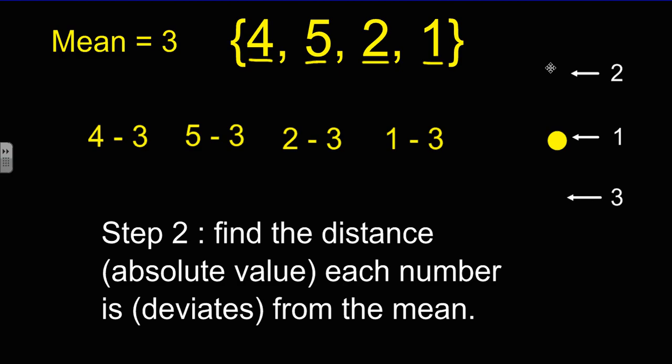And since distance is always positive, we would want to use absolute value to make sure it was positive. 4 minus 3 is 1. And the absolute value tells us it must be positive. 5 minus 3, I'm using this 5 over here, and I get 2. And again, with absolute value, it's positive.